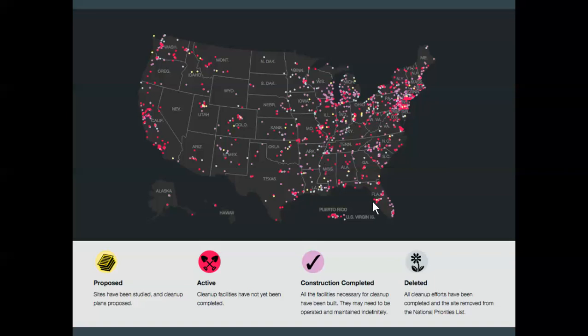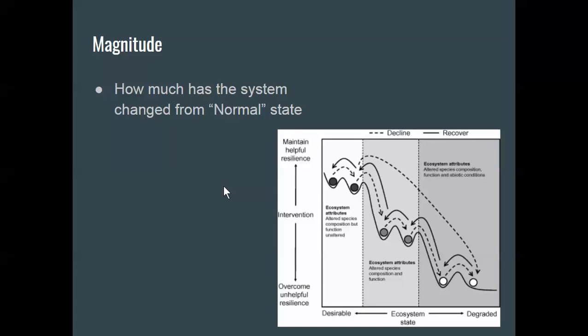And so this gets us to the question of magnitude. How far does the system move from, if you will, its normal state? And the important idea about this is what we call resilience. So imagine, if you will, it's kind of a simple idea, but imagine a ball in a little trough.